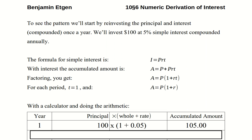We're going to invest $100 at 5% simple interest and compound it annually. The formula for simple interest is I equals PRT: I is the interest, P is the principle, R is the rate, and T is time.